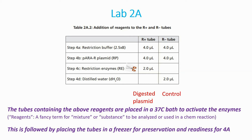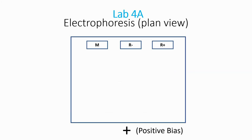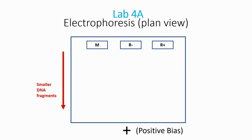The goal of Lab 4A is to verify that we indeed removed the RFP gene from the PARA-R plasmid. The sample prepared in Lab 2A is placed in wells at one end of a slab of porous gel. A positive bias at the opposite end attracts the DNA strands and plasmids due to their negatively charged phosphate groups. The smallest strands move most easily through the gel, whereas larger strands and fully intact plasmids move more slowly.